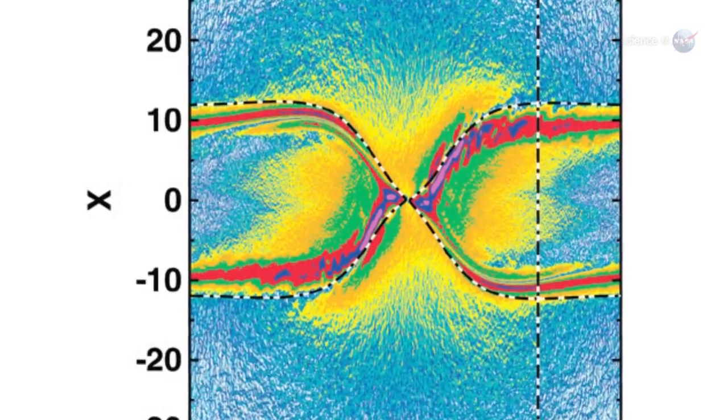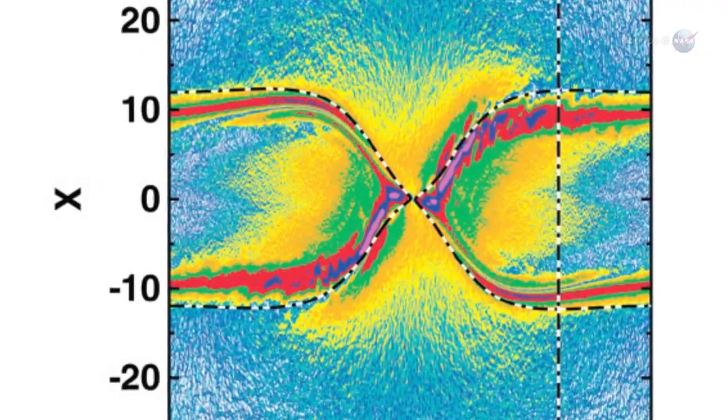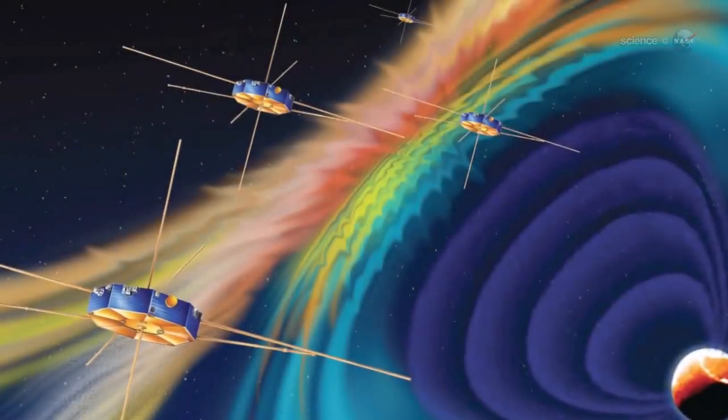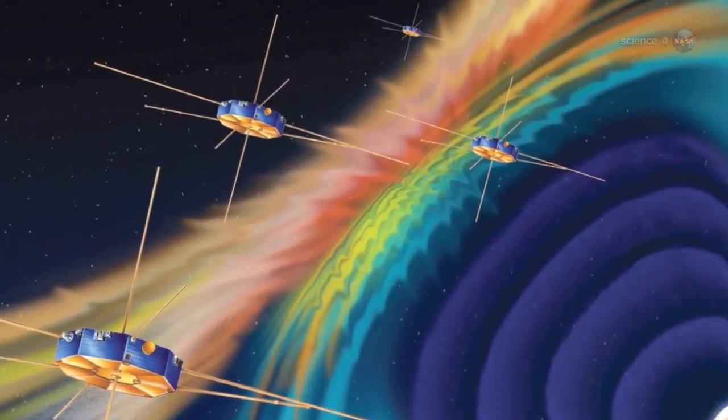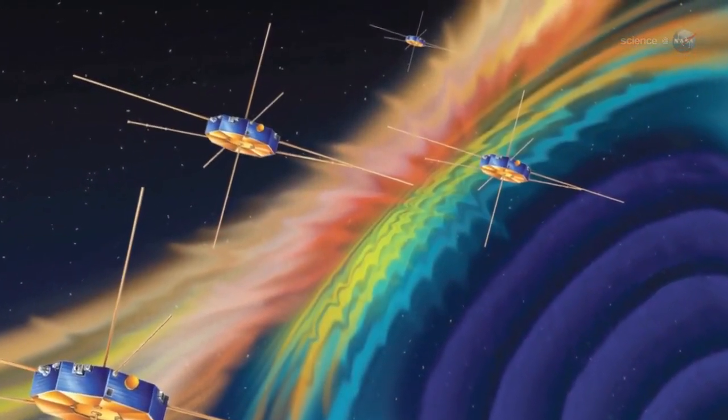A single spacecraft, properly instrumented, can make these measurements. This means that a single member of the MMS constellation, using the diagnostics, can find a portal and alert other members of the constellation.